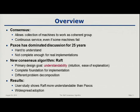Today I'm going to talk about a new consensus algorithm that Diego and I designed called Raft. It had the unusual design goal that our number one goal was understandability — we wanted to make an algorithm that was easier to understand so you could develop intuitions about it, easy to explain, and so on. In addition, we also wanted something complete enough that you could really use it to build real systems. This resulted in a very different problem decomposition from what Paxos has.